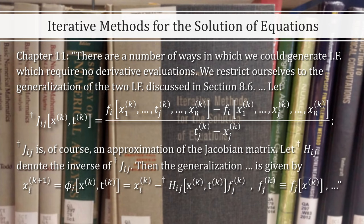Writing J is, of course, an approximation of the Jacobian matrix. Let H denote the inverse of J, then the generalization is given by this equation. I know it looks a little complicated, but bear with me.